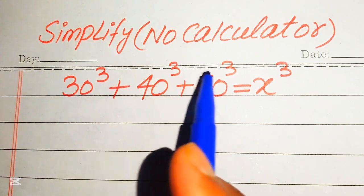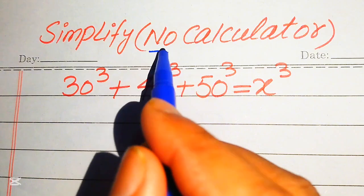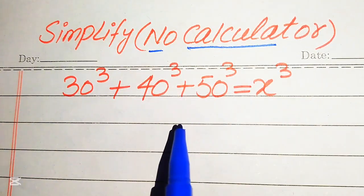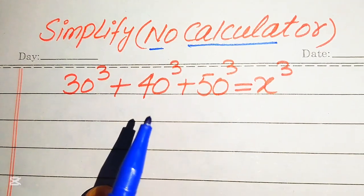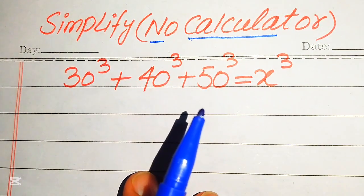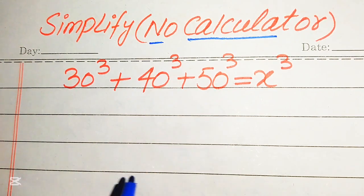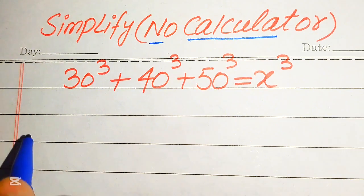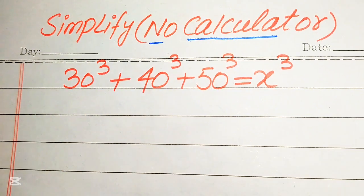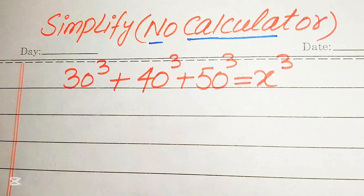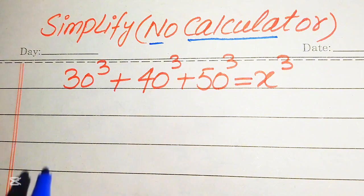A calculator is not allowed in this problem, which means that we need to show all of the working on paper. If you have any other method in mind, please don't hesitate to write it into the comment section. This question has many solutions, but I hope my method is the very easiest one.